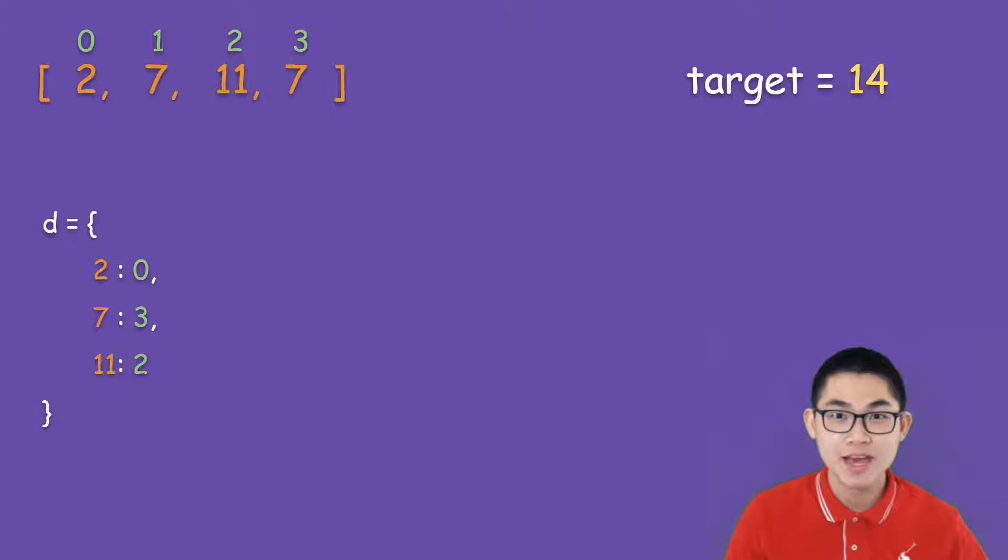Step number 2 is to find two numbers such that they add up to 14. So let's look at this array again and start with this number, number 2. Can we find a number x such that when x plus 2 gives us 14? Well, x is going to be 14 minus 2 and x is 12.